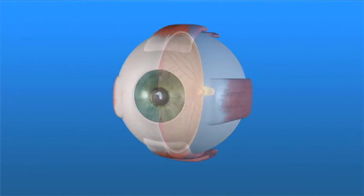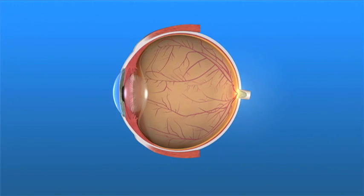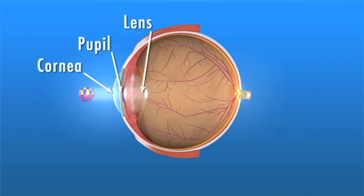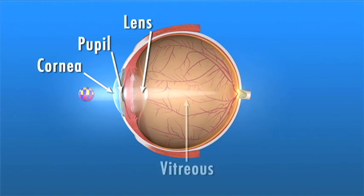To understand how we see clearly, we need to understand how the eye works. Light rays enter the eye through the clear cornea, pupil, and lens.